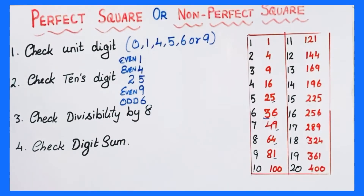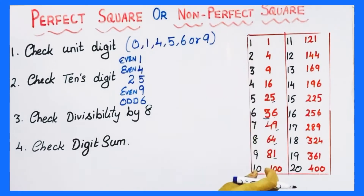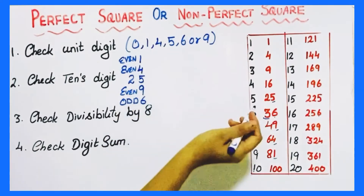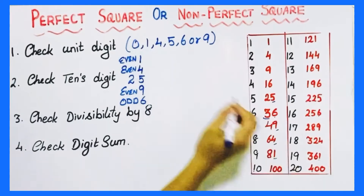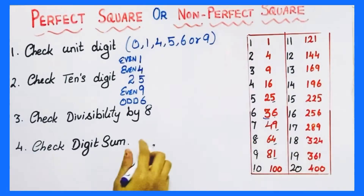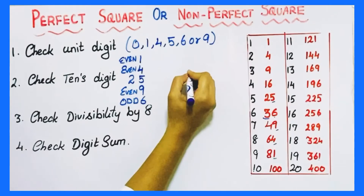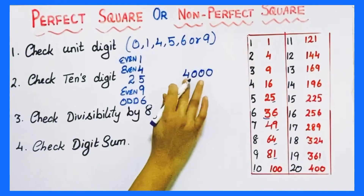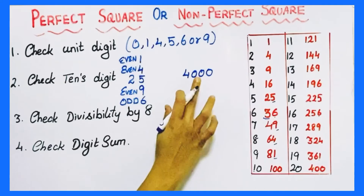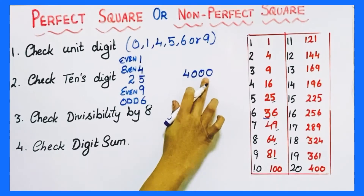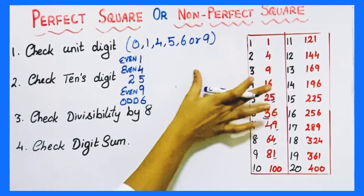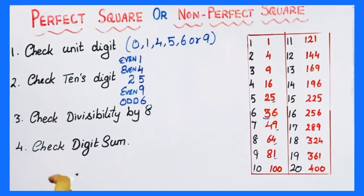Next, if a perfect square number has unit digit 0, then check its tens place — the tens place will always be 0. So it will have an even number of zeros. Perfect square numbers will have an even number of zeros. For example, 20 squared is 400, which has an even number of zeros. If a number has an odd number of zeros, it is not a perfect square number.